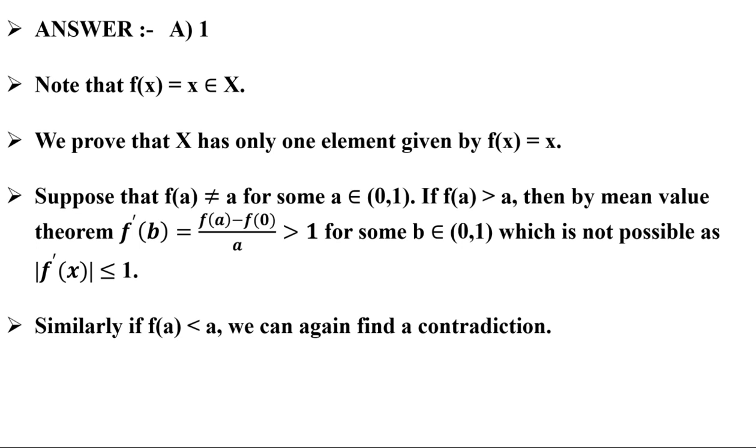We will again find a contradiction, and thus it is not possible. Hence, there is only one element, that is f(x) = x.